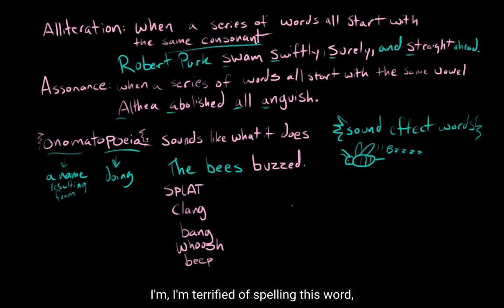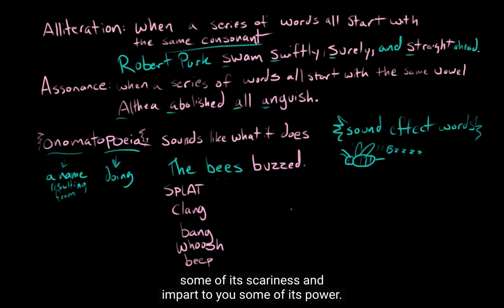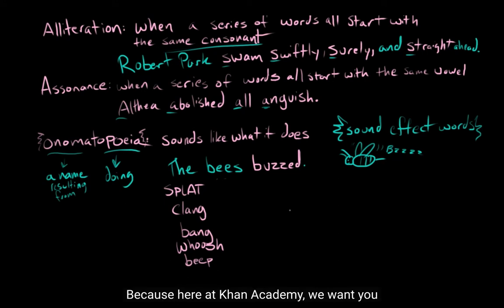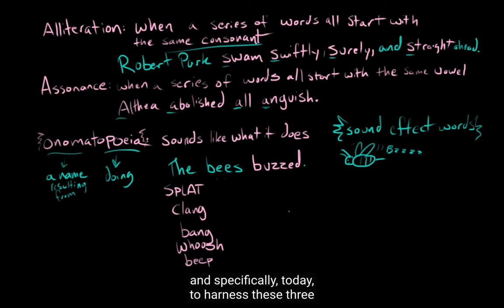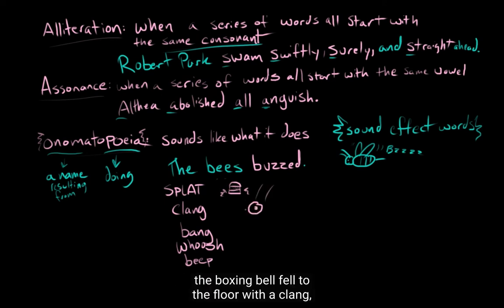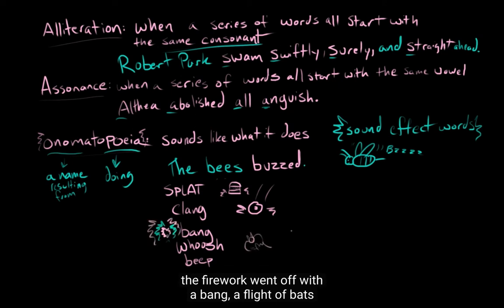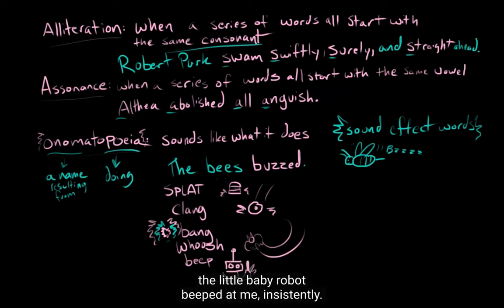I know it's a terrifying looking word, right? Like, no one word should have this many vowels in front of the other. I get it. I get it. I'm terrified of spelling this word. But I managed to do it, apparently. And now you know what it means. And that should take away some of its scariness and impart to you some of its power. Because here at Khan Academy, we want you to have the power to harness language. And specifically, today, to harness these three different language styles. So alliteration, repeating the same consonant a bunch of times in a row. So swimming swiftly, surely, and straight ahead. Assonance, where you repeat the same vowel, like abolished all anguish. And onomatopoeia, where you make a word that sounds like what the word's effect is. So the bees buzzed. The pudding cup went splat. The boxing bell fell to the floor with a clang. The firework went off with a bang. A flight of bats whooshed past my head. And the robot, the little baby robot, beeped at me insistently.